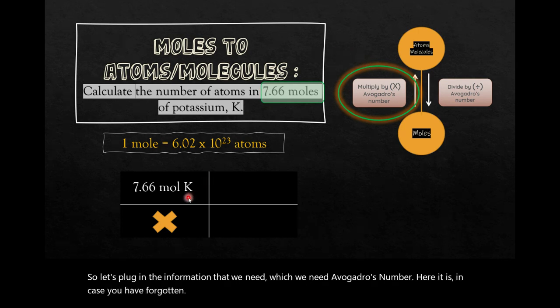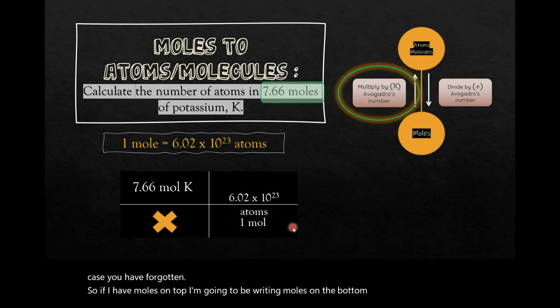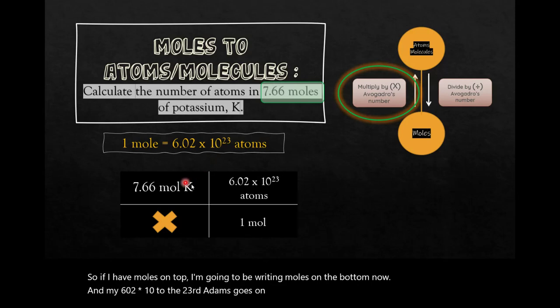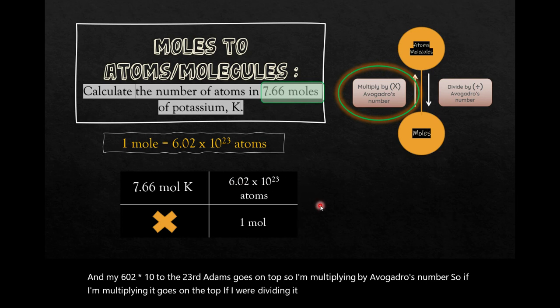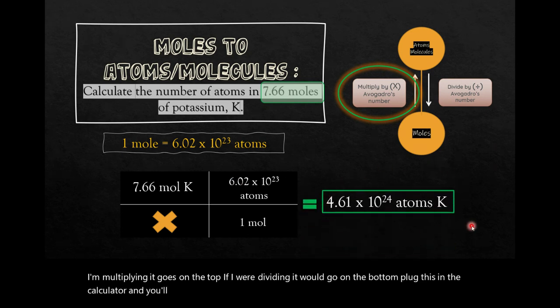So if I have moles on top, I'm going to be writing moles on the bottom now. And my 6.02 times 10 to the 23rd atoms goes on top. So I'm multiplying by Avogadro's number. So if I'm multiplying, it goes on the top. If I were dividing, it would go on the bottom. Plug this in the calculator, and you'll find this value for the number of atoms of potassium in this many moles of potassium.